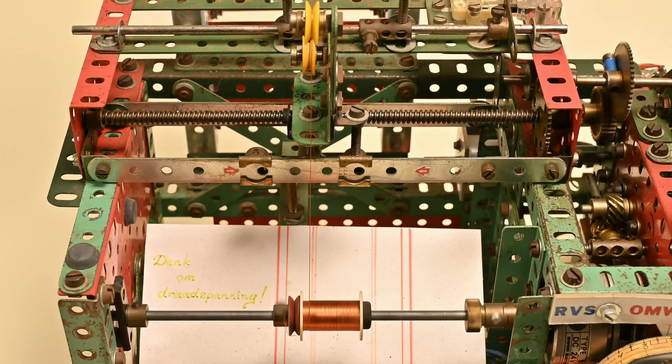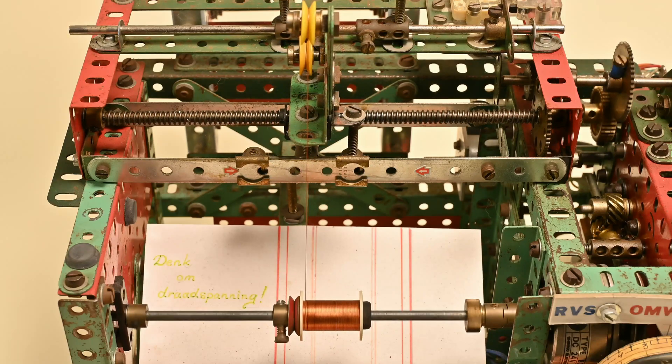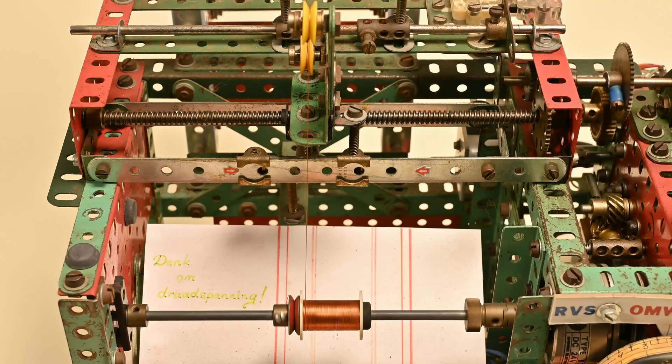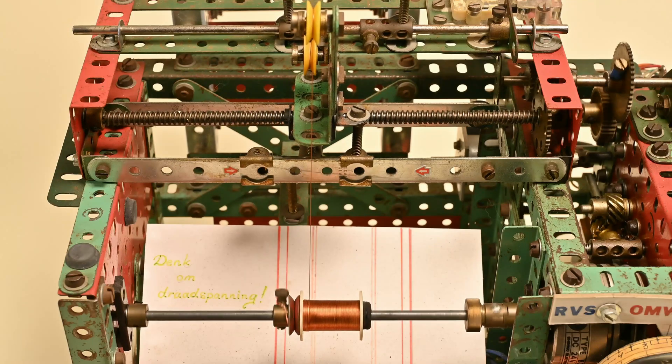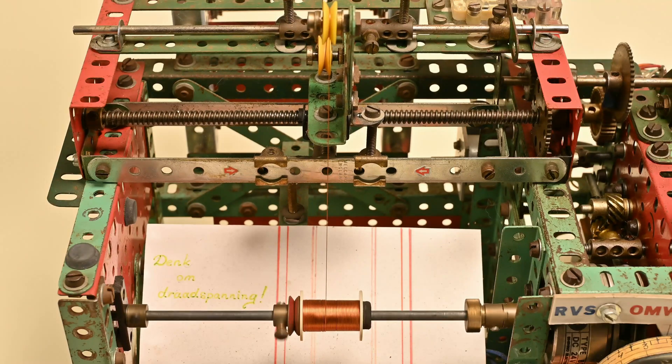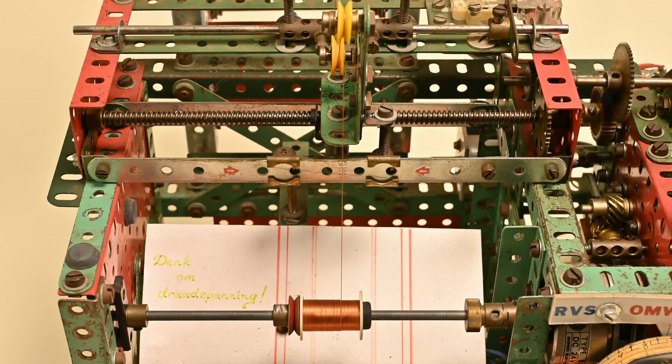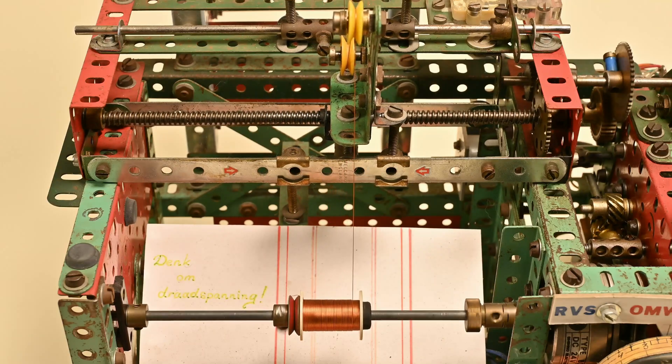When the copper wire is running to the end of the coil, the rotational movement of the spindle will be reversed. This will lead into a movement of the wire guide into the opposite direction.